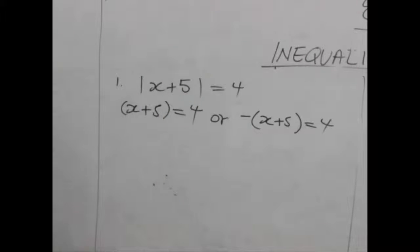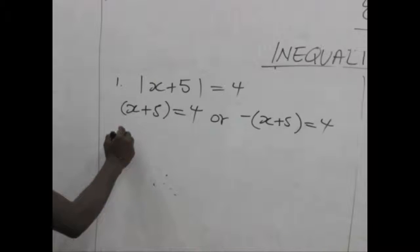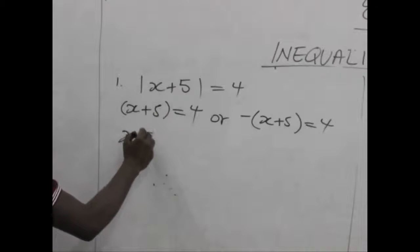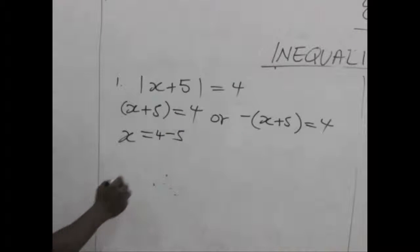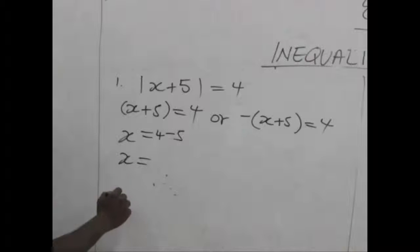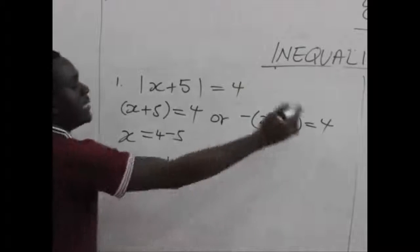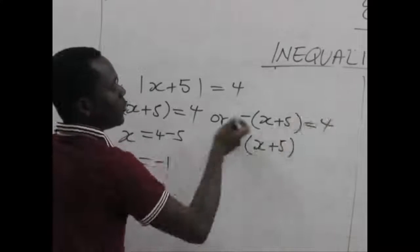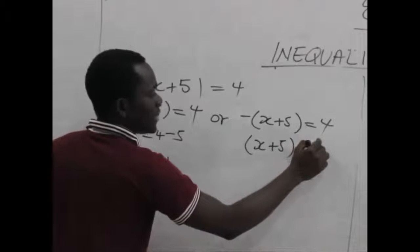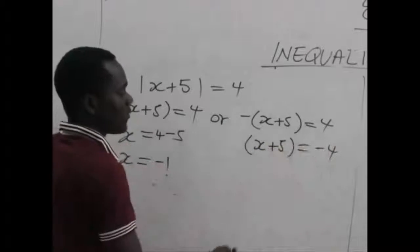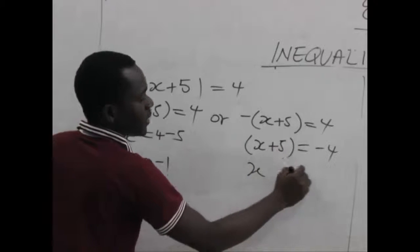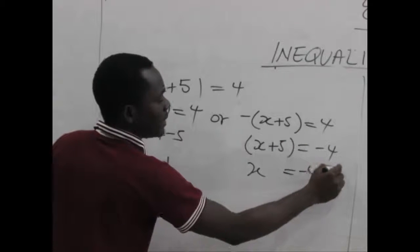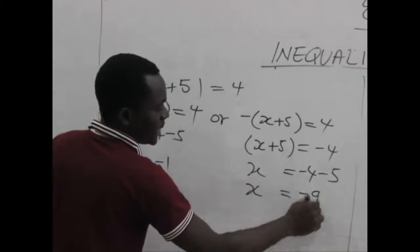We place it back into the absolute value to find out whether they fit or not. Working the positive aspect, the 5 becomes a negative 5, so our x becomes minus 1 for the positive solution. For the negative solution, we divide both sides by minus 1 so that we get x plus 5 equals minus 4. Sending the 5, x becomes minus 5, so x in the other case becomes minus 9.